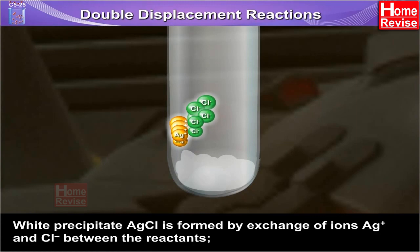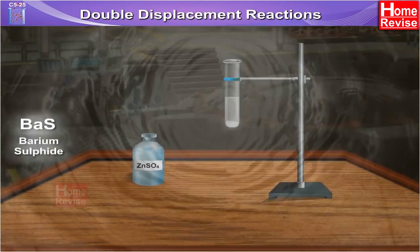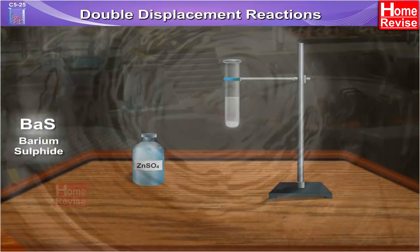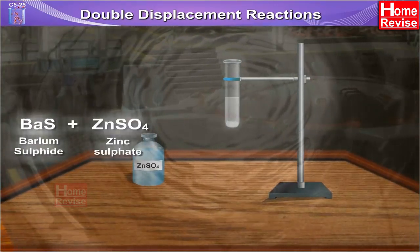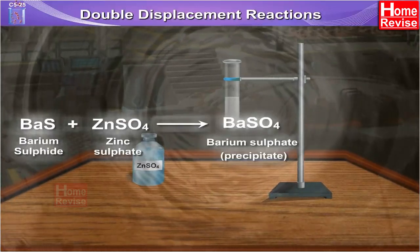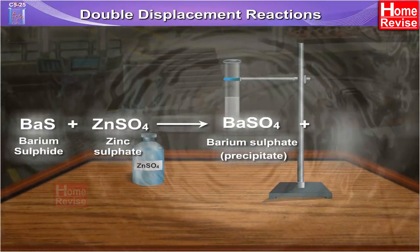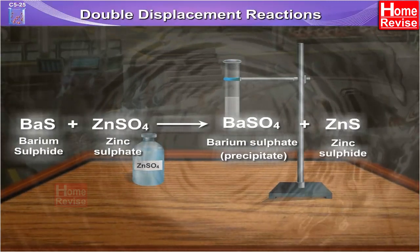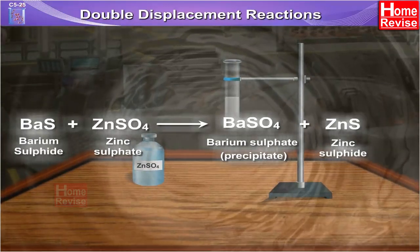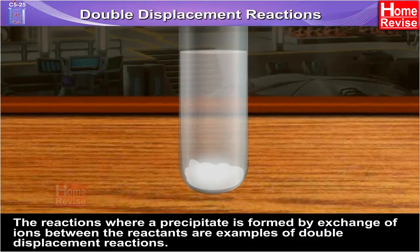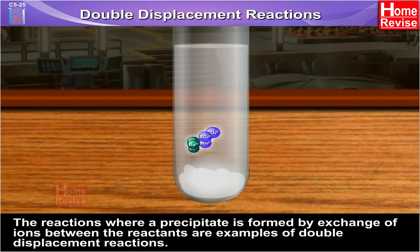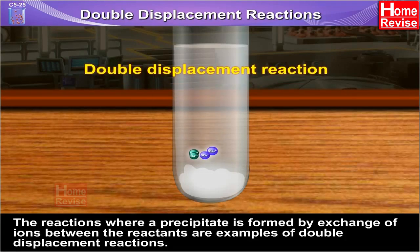BaS (barium sulfide) + ZnSO4 (zinc sulfate) gives BaSO4 precipitate (barium sulfate) plus ZnS precipitate (zinc sulfide). The reactions where a precipitate is formed by exchange of ions between the reactants are examples of double displacement reactions.